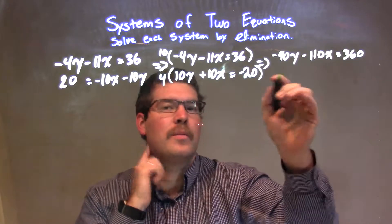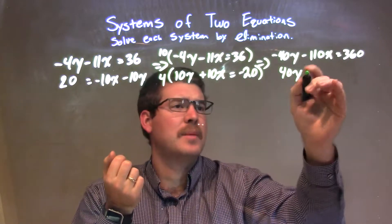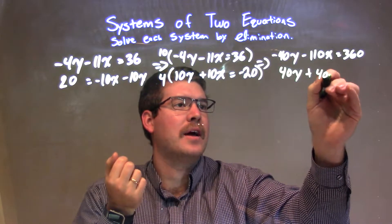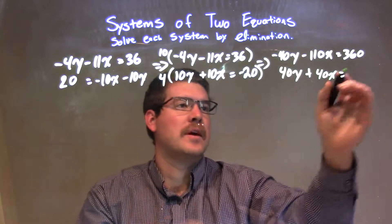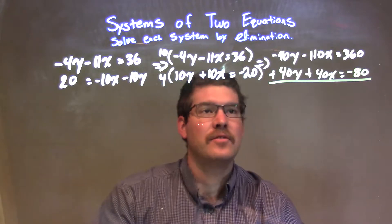The bottom, multiply that whole thing by 4. 4 times 10y is 40y, 4 times 10x is 40x, and 4 times negative 20 is negative 80.